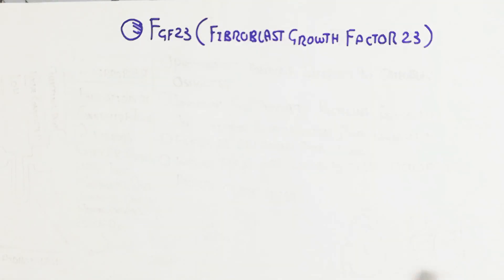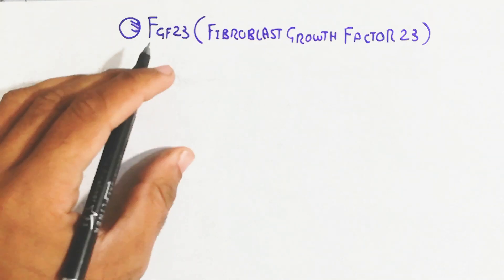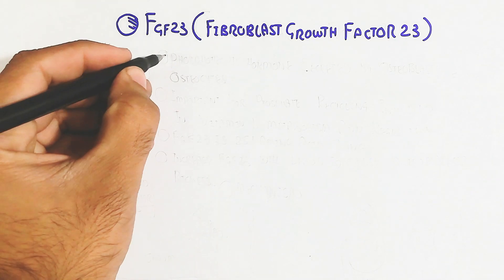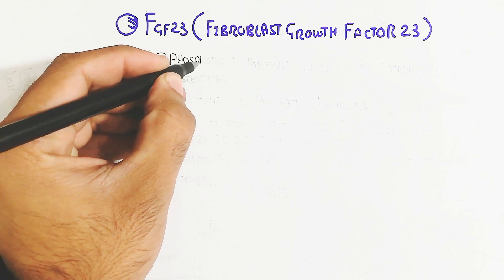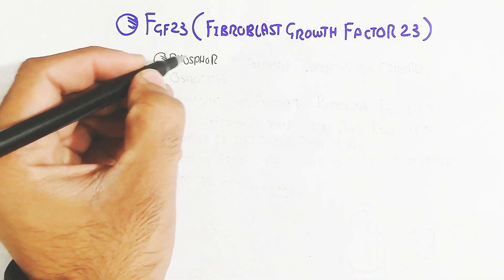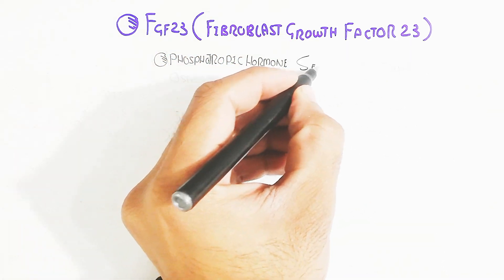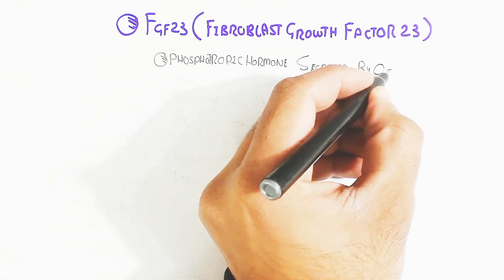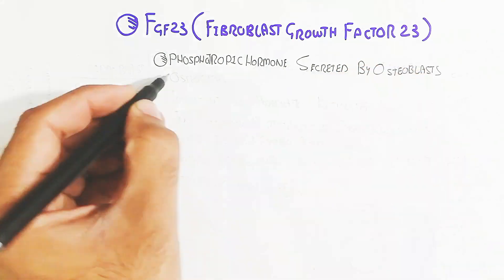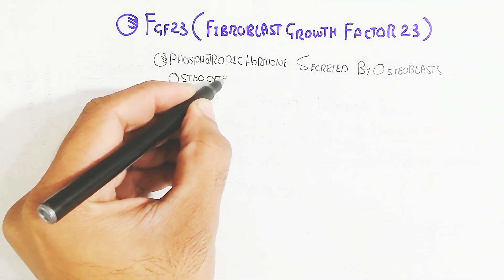It is the phosphotropic hormone which is secreted by osteoblasts and osteocytes in the bone, because the osteocytes and osteoblasts are present in the bone. Remember that this changes the physiology and the phosphate group deposition homeostasis.